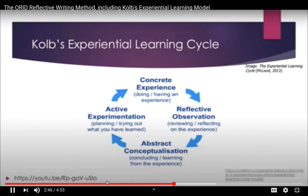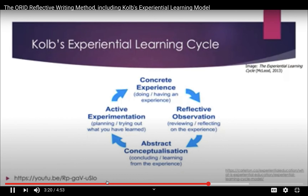We have experiences all the time that aren't necessarily learning experiences, but once you start reflecting on them, that's when the learning can happen — really thinking about what happened, how did I feel. Then the next step is Abstract Conceptualization, where we start putting words to our experience, naming what happened, saying it to someone else or writing about it — that's when we really start making concrete what we've learned.